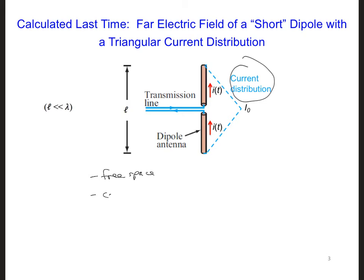It's made of copper with a sigma of 5.8 times 10 to the 7th Siemens per meter, and the radius, let's say A, is 1 millimeter.